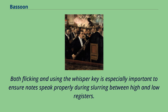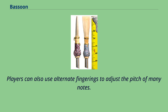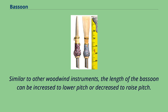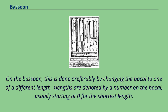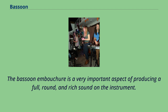While bassoons are usually critically tuned at the factory, the player nonetheless has a great degree of flexibility of pitch control through the use of breath support, embouchure, and reed profile. Players can also use alternate fingerings to adjust the pitch of many notes. On the bassoon, tuning is done preferably by changing the bocal to one of a different length; lengths are denoted by a number on the bocal, usually starting at zero for the shortest length and three for the longest. The bassoon embouchure is a very important aspect of producing a full, round, and rich sound on the instrument. The lips are both rolled over the teeth, often with the upper lip further along in an overbite. The lips provide micromuscular pressure on the entire circumference of the reed, which grossly controls intonation and harmonic excitement.